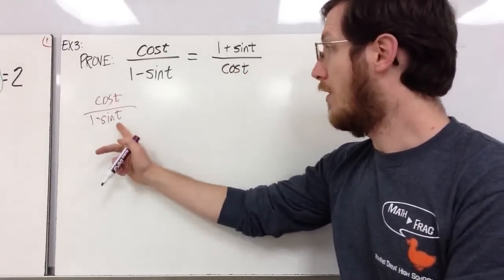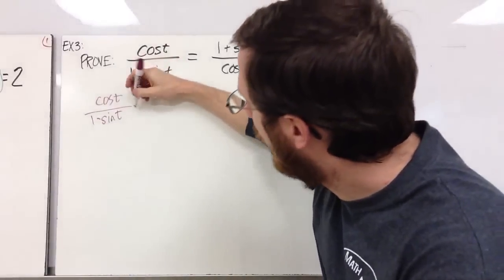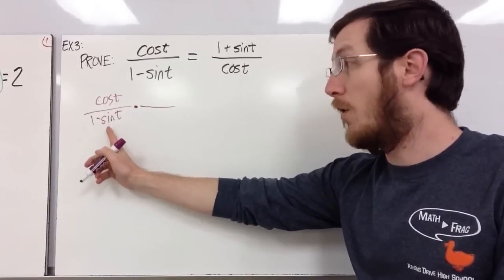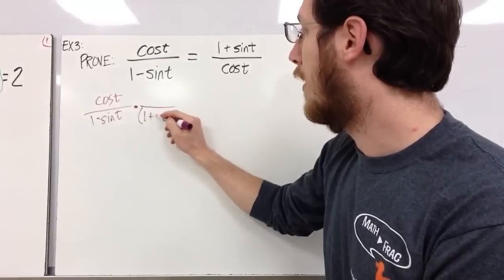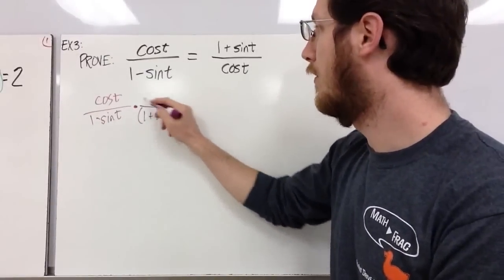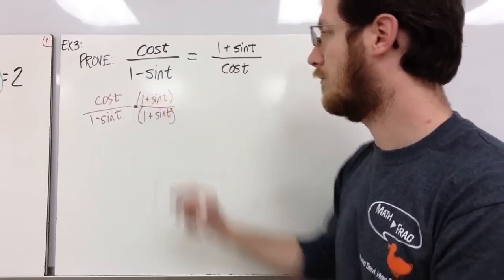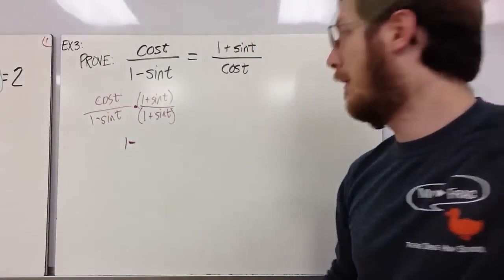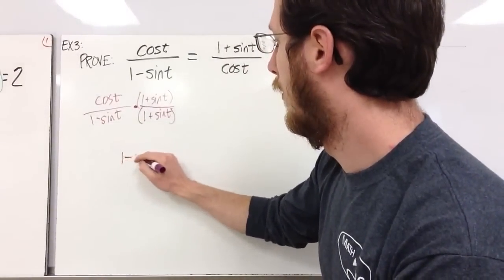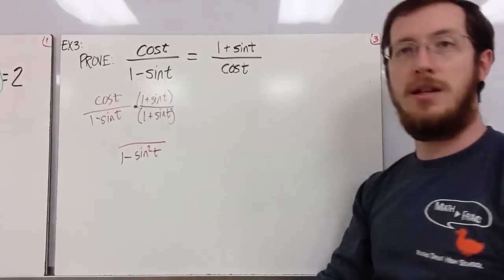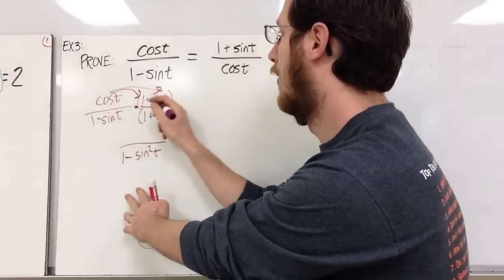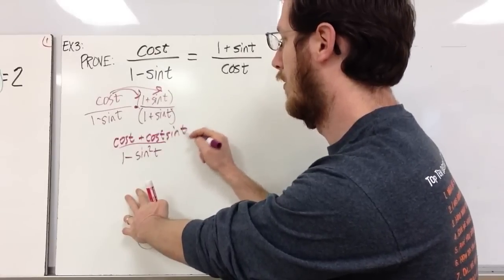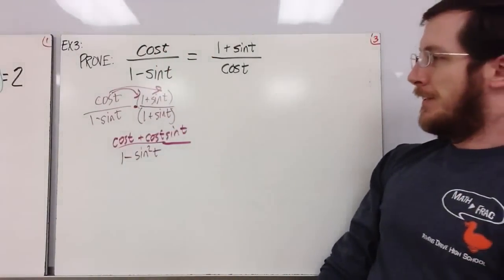I know that 1 − sin²(t) = cos²(t), so my best bet is to create a difference of squares on the bottom. One tool you have is to use difference of squares to your advantage — even if you've got just one factor of a difference of squares, multiply by the conjugate of that piece to make the difference of squares happen. So I'll multiply numerator and denominator by (1 + sin t). On the bottom that gives 1 − sin²(t). On top, distributing, we get cos(t) + cos(t)sin(t).